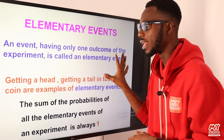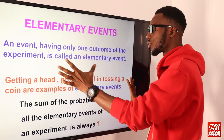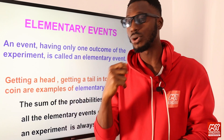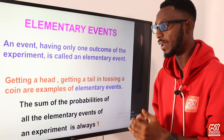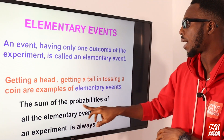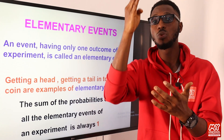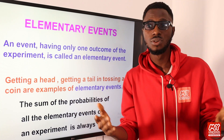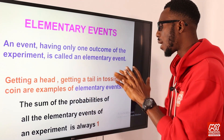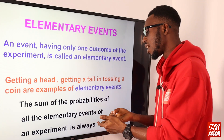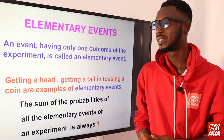An elementary event — the same as a simple event — is an event having only one outcome of the experiment. For example, getting a head when I toss a coin, or getting a tail. These are basically elementary events. The sum of the probabilities of all the elementary events of an experiment is always 1. The probability of getting a head is 1 out of 2, and the probability of getting a tail is also 1 over 2 — and together they sum to 1.